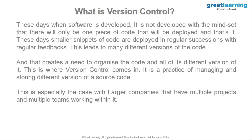Software is no longer developed with the mindset that only one piece of code will be deployed. You will write multiple versions of code to improve upon previous versions. These days, smaller snippets of code are deployed in regular successions with regular feedback. You write small pieces of code, push them, get feedback, and improve upon them. This leads to many different versions of code, creating a need to organize them — and this is where version control comes in.